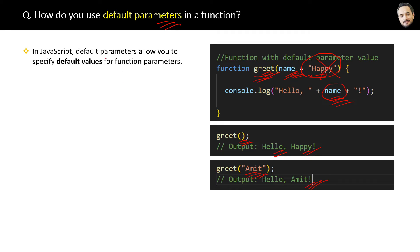in JavaScript, default parameters allow you to specify default values for function parameters. Okay, that's the answer.